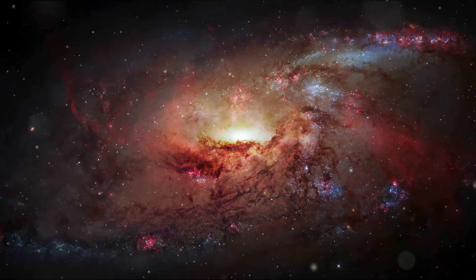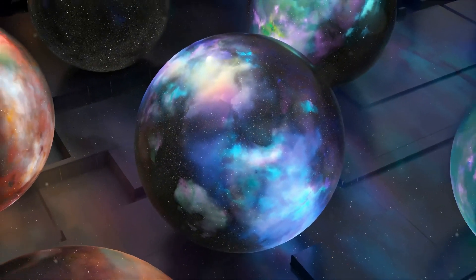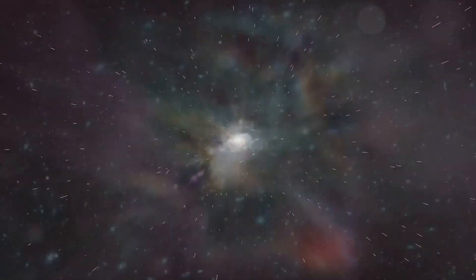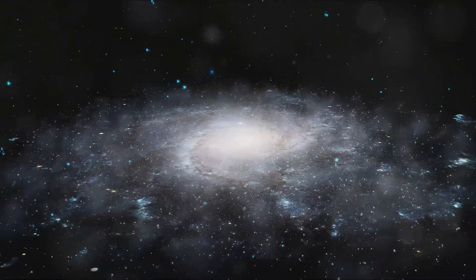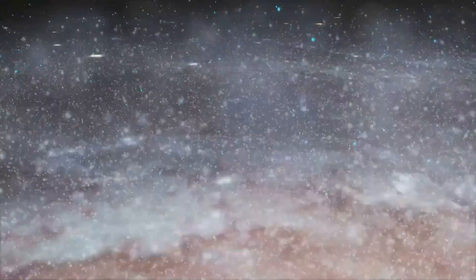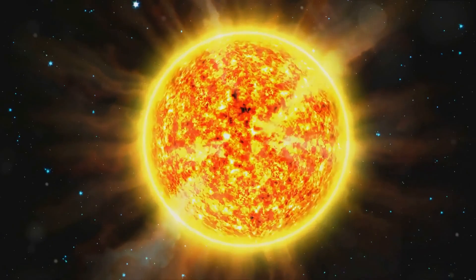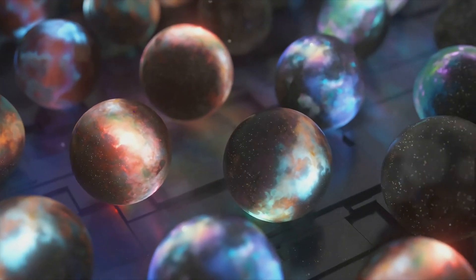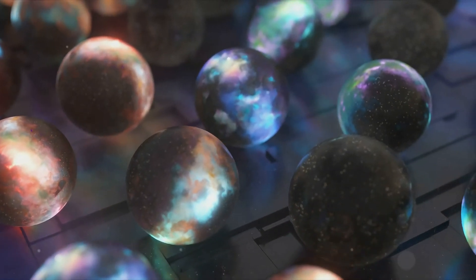The fate of the universe depends on its density, and there are three potential scenarios based on this density. Firstly, let's consider an open universe. Picture a universe that's like an ever-expanding balloon, continuously growing without any limits. This is what an open universe is like. If the cosmos has less than a certain critical density, the universe would expand forever, much like our balloon. The galaxies would continue to drift apart, becoming increasingly isolated and cold.